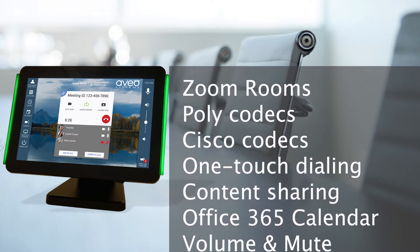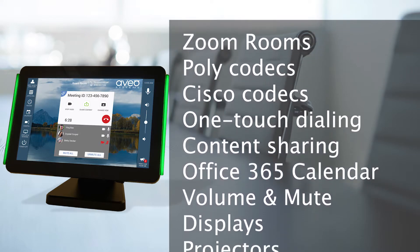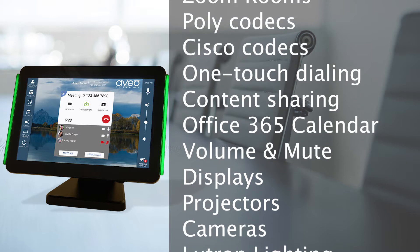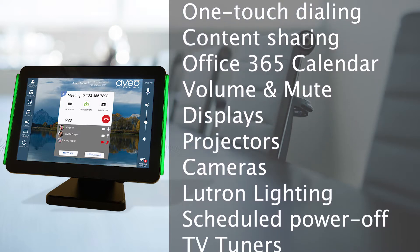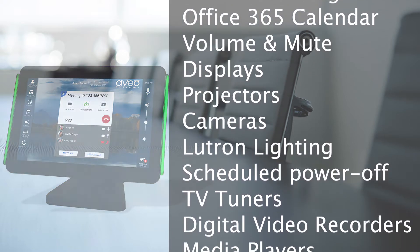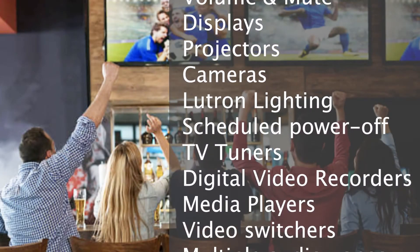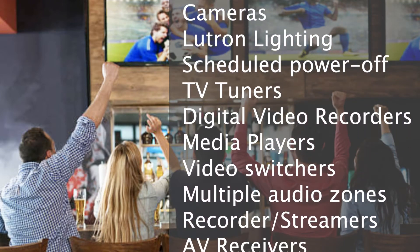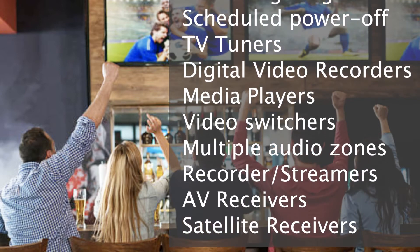For collaboration applications using audio or video conferencing, Mirror Connect offers one-touch audio and video dialing, easy content sharing from multiple video sources, integration with Microsoft's Office 365 calendar for one-touch dialing of upcoming meetings, volume and mute control, display, projector and camera control, Lutron lighting and shade control, scheduled room power-off, and more.